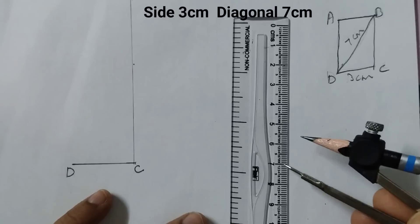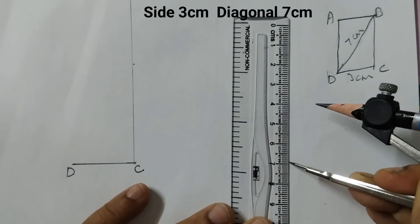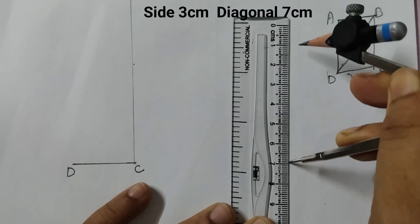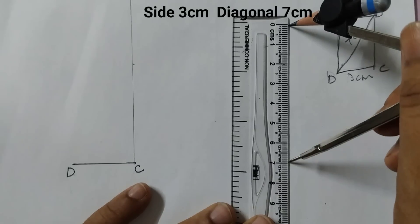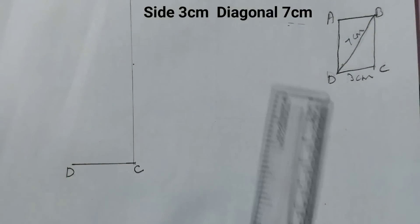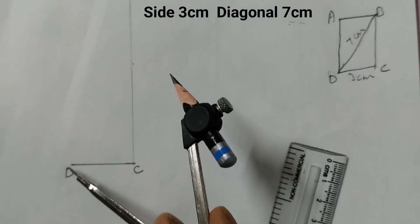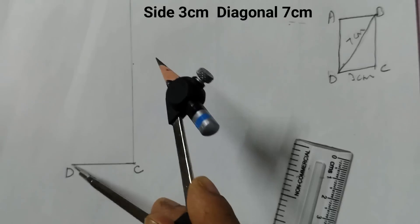So 7 cm, this is 7. Here we will measure it using our compass. This is 7. Keep the compass like this here and cut an arc.